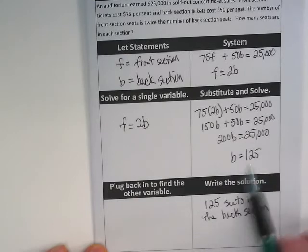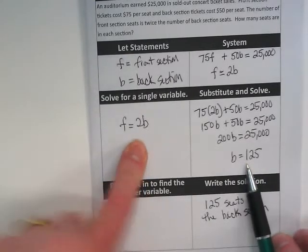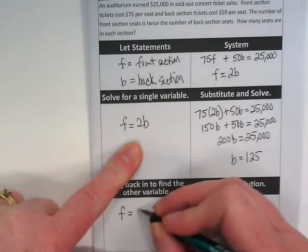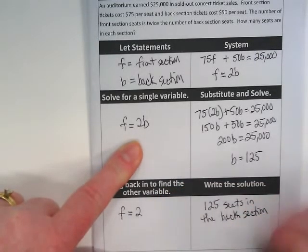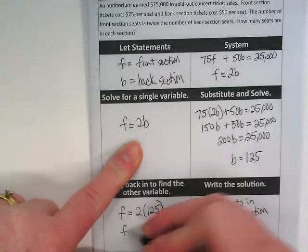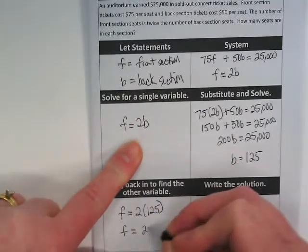And now we're going to take this and we're going to put it into this equation. The front equals twice the back, so 2 times 125. That means front equals 250.